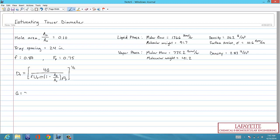We'll start with the parameter g, which is the mass flow rate of vapor. The molar flow rate of vapor is given as 735.2 pound moles per hour. We can convert this into a mass flow rate by multiplying by the molecular weight of the vapor, 41.2. The parameter f was given to us as 80%, or 0.8.